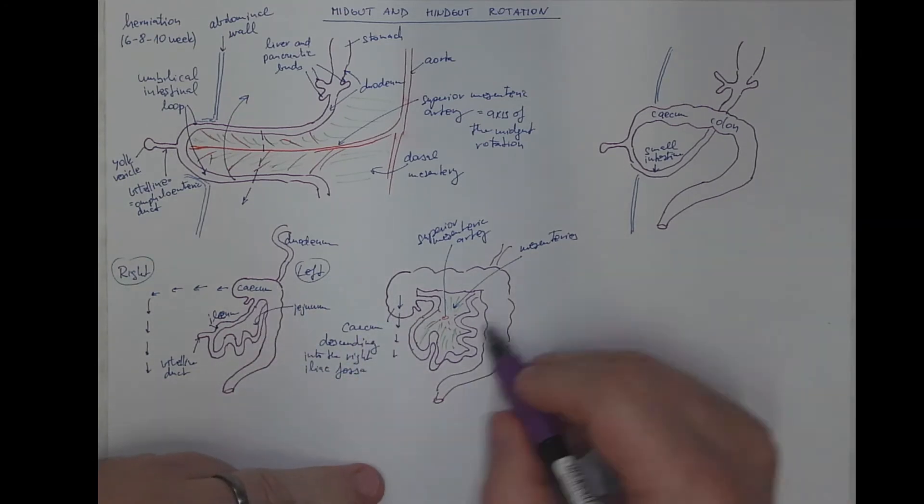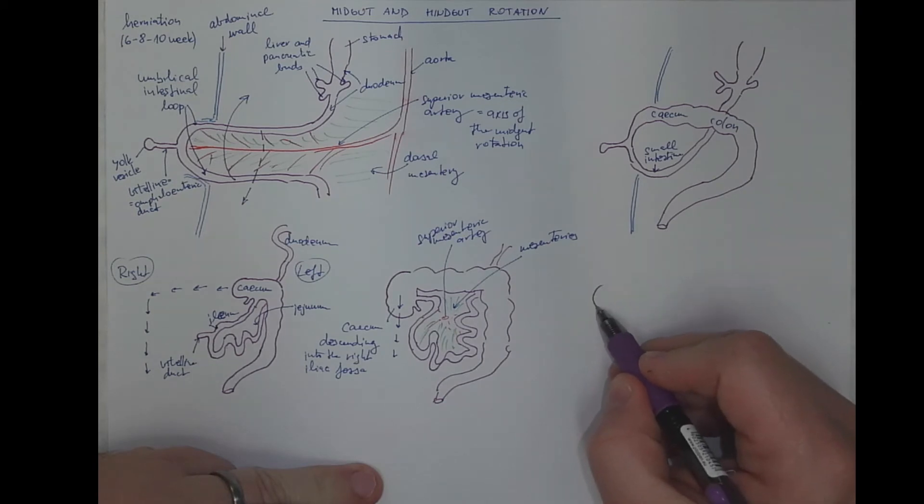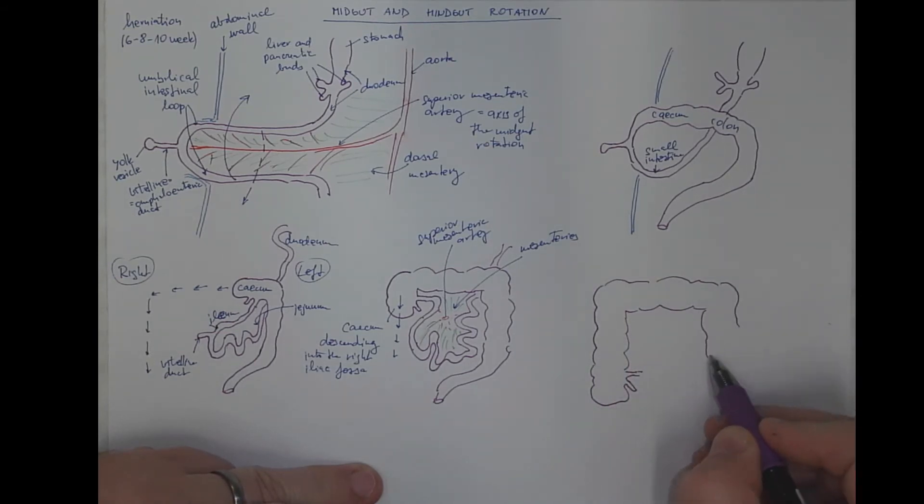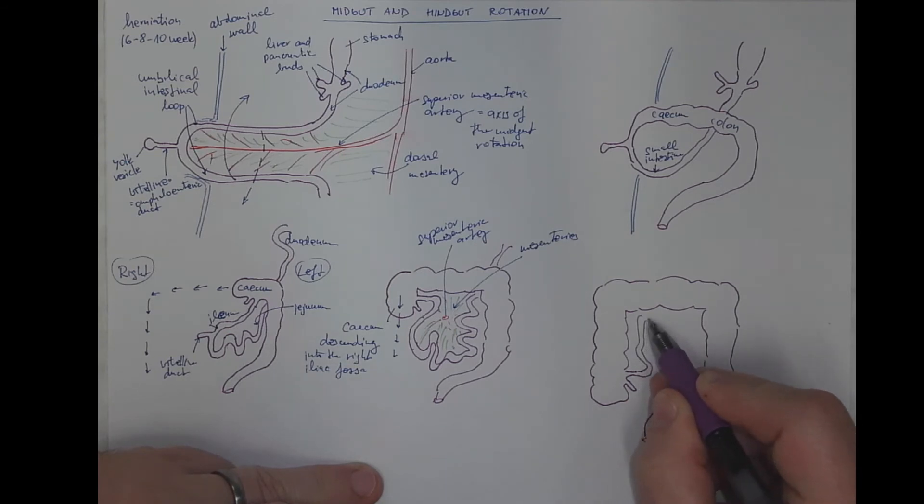Finally, when the cecum will reach the right iliac fossa, so will the appendix with the variability of its positions. Here will be the ileocecal junction. And we got the transverse colon, the transverse colon, the descending colon, the sigmoid, and the rectum. And here the small intestine with its many loops.